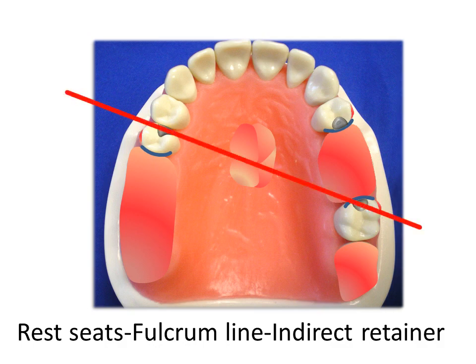Once the fulcrum is located, we can identify the location of the indirect retainer. Here we see that the bicuspid rest is ideally situated to function as the indirect retainer.